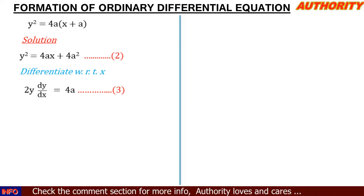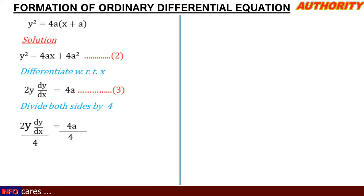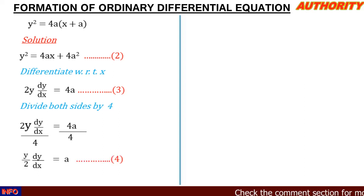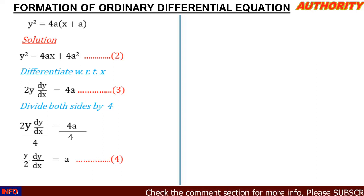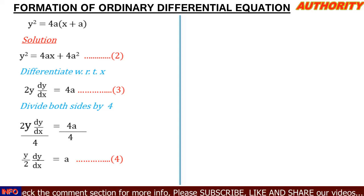From this equation, let's make a the subject. We divide both sides by 4, giving us (2y dy/dx) / 4 = a, which simplifies to a = (y/2)(dy/dx). We call this equation 4.